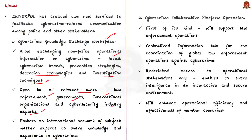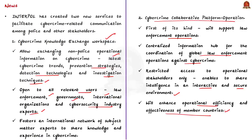The second service is the Cybercrime Collaborative Platform. It is the first of its kind — a centralized information hub for coordination of global law enforcement operations against cybercrime. Access to this platform is restricted to only operational stakeholders, enabling them to share intelligence in an interactive and secure environment, thereby enhancing the operational efficiency and effectiveness of member countries. These are the two services introduced by Interpol.